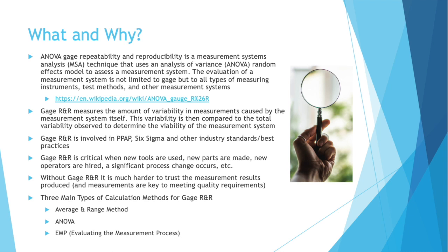ANOVA Gauge Repeatability and Reproducibility, that's the R&R, is a Measurement Systems Analysis MSA technique that uses an analysis of variance, that's the ANOVA, random effects model to assess a measurement system. The evaluation of a measurement system is not just limited to a gauge, but to all types of measuring instruments, test methods, and other measurement systems.